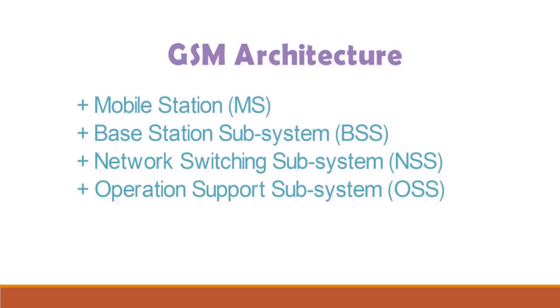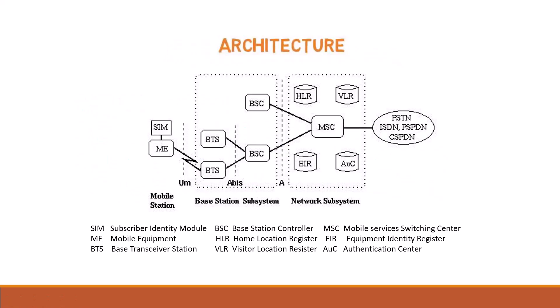GSM architecture is the basic architecture in a cellular network. It contains four subsystems: Mobile Station, Base Station Subsystem, Network Switching Subsystem, and Operation Support Subsystem. Here is the representation of each subsystem in the architecture. It is noted that each subsystem contains some components. Let's discuss it in detail one by one.